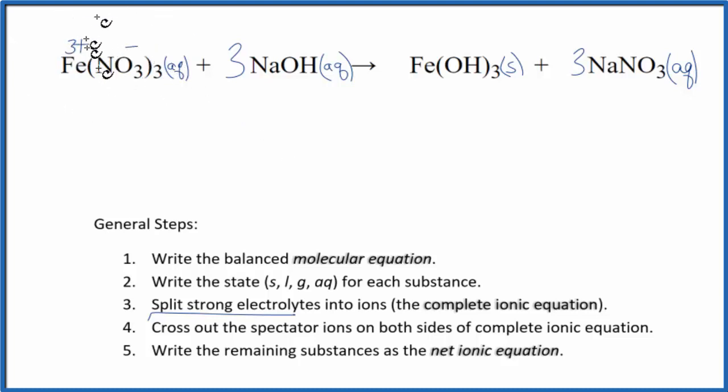So for iron 3 nitrate, we have Fe3 plus. And I'll write aqueous at the end. I won't write that for each thing right now. Plus we have three of these nitrate ions. Three of the NO3 minus ions.